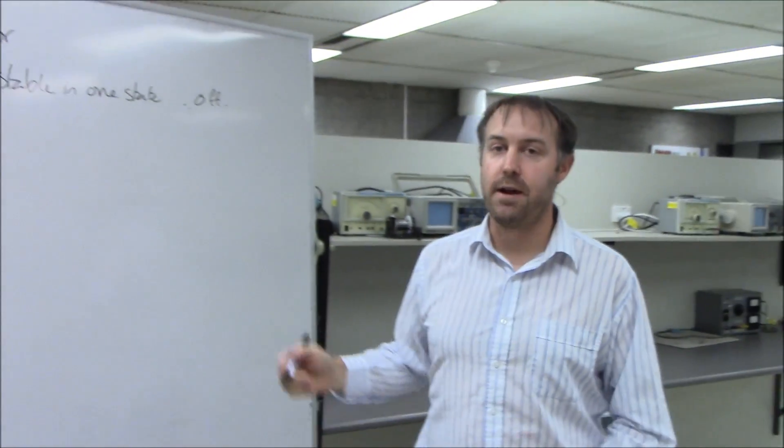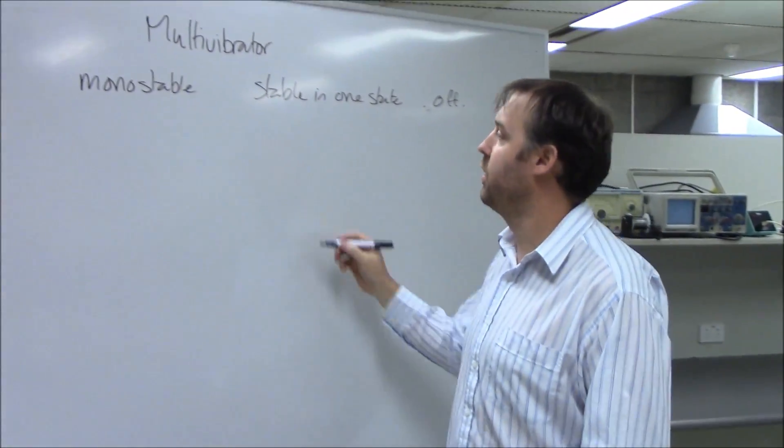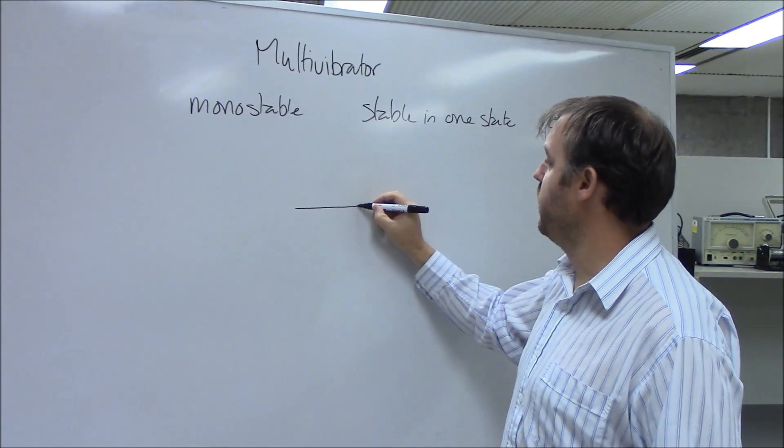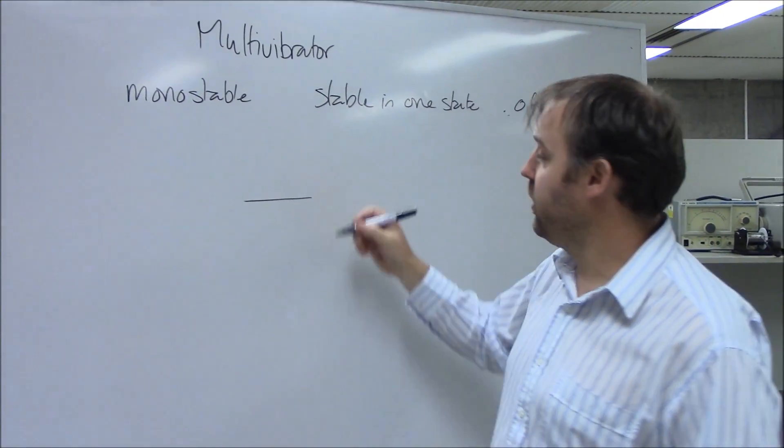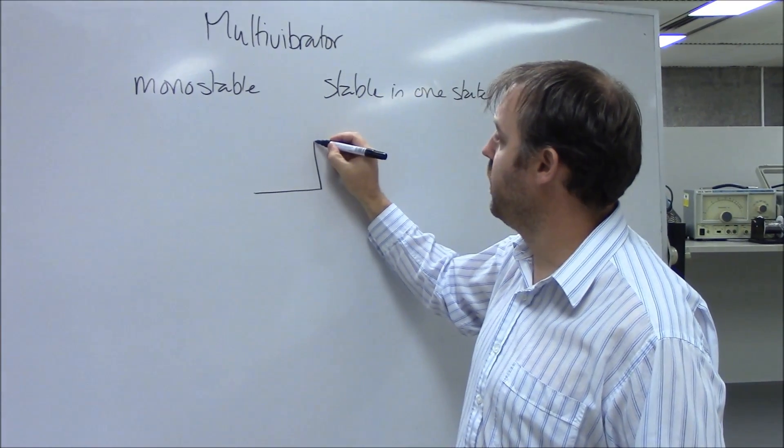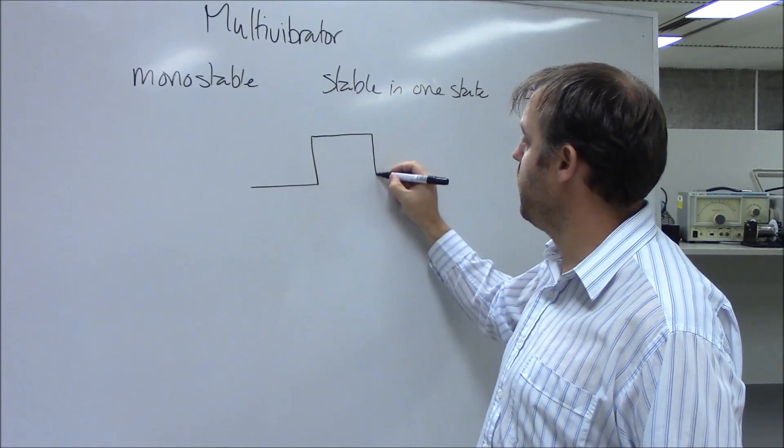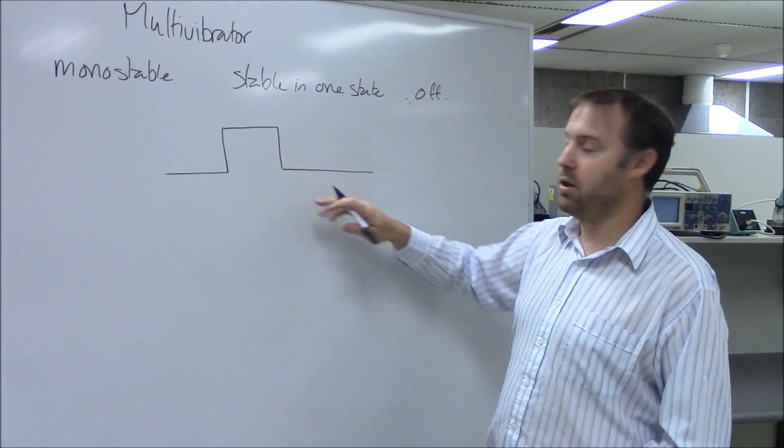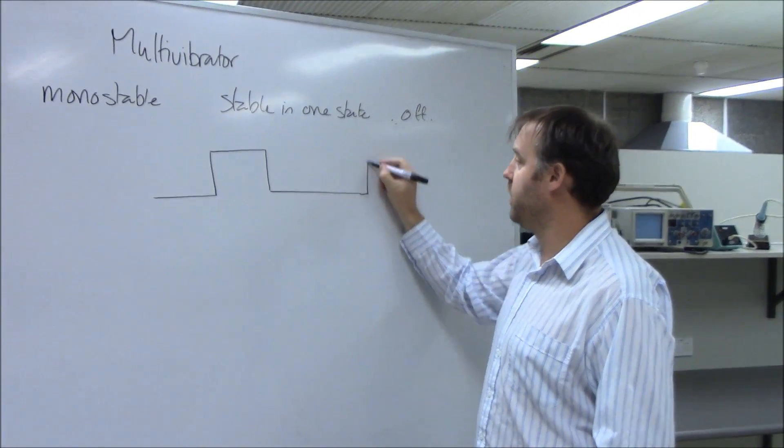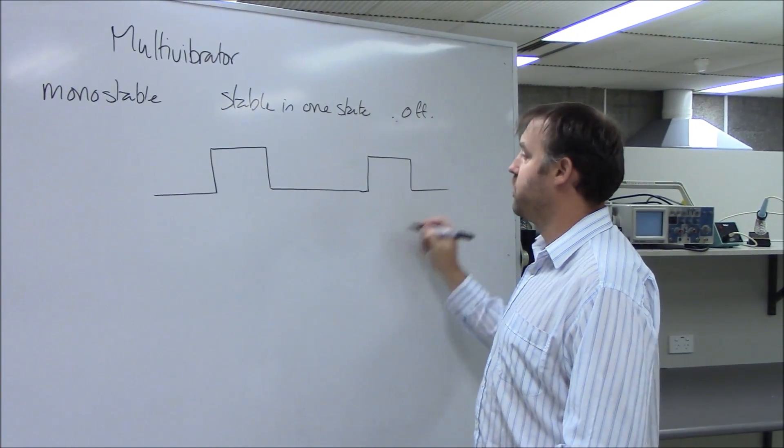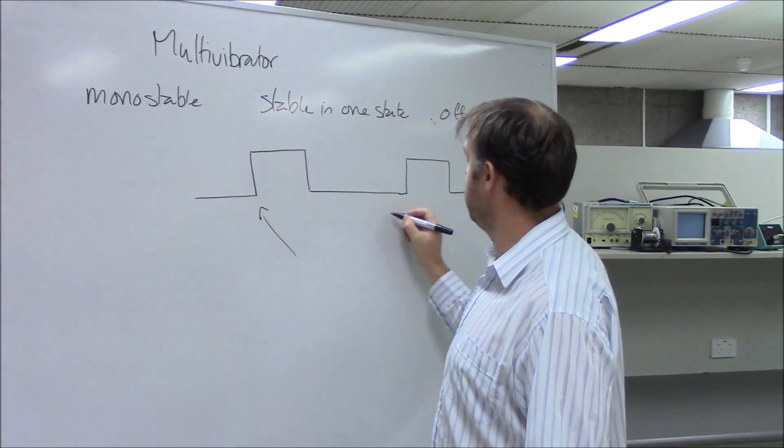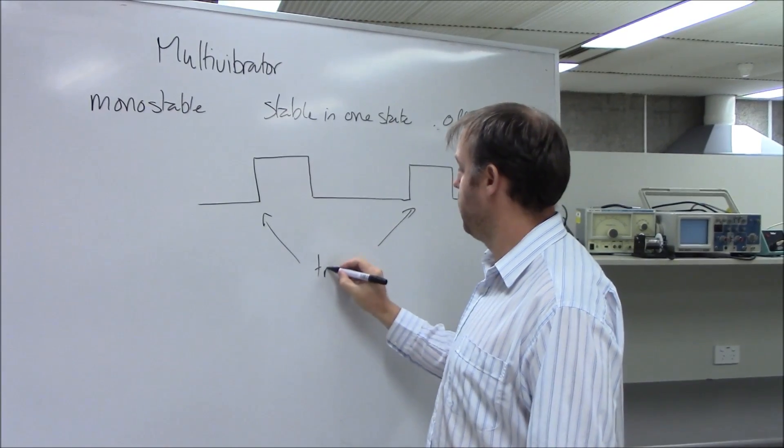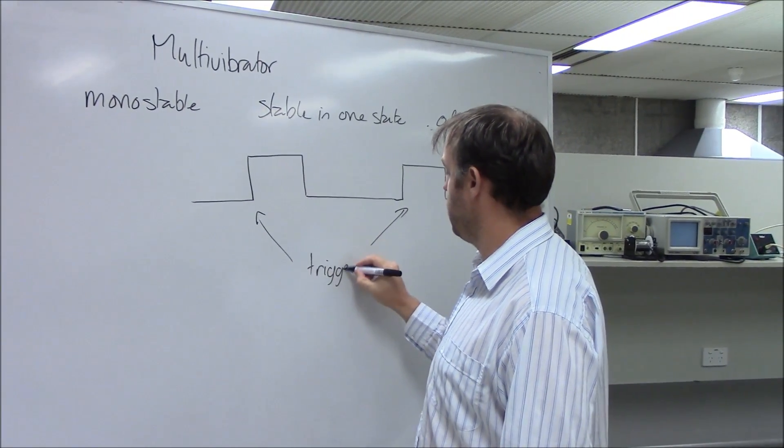If we were to graph what the voltage over time might look like, it would be low, then we trigger it with something to disturb that stability, go high for a certain amount of time, then it would drop back low again. It will not change until we trigger it again, so we need some triggering event at each of these two times.